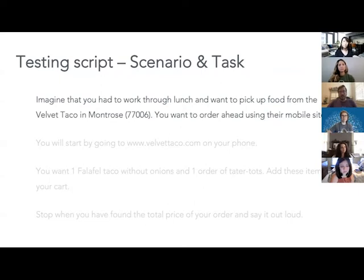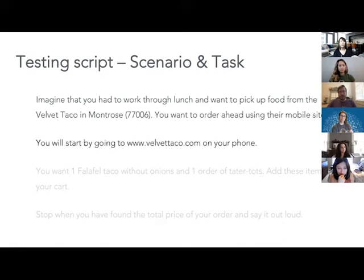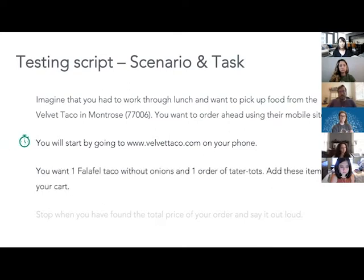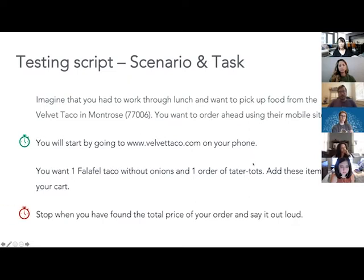Moving on to the scenario and task. The scenario might be: 'Imagine you had to work through lunch and want to pick up food from Velvet Taco in Montrose. You want to order ahead using their mobile site.' Provide a starting point — 'You will start by going to velvettaco.com on your phone' — so all participants start at the same place. If time on task is a measure, start your timer here. Then provide the task: 'You want one falafel taco without onions and one order of tater tots — add these items to your cart.' Finally, let the participant know where the task ends: 'Stop when you've found the total price of your order and say it out loud.' If the participant arrives at the correct price, the task is completed successfully.